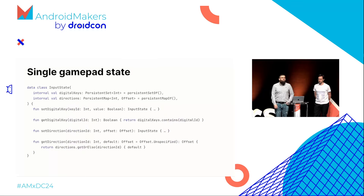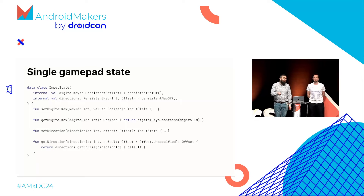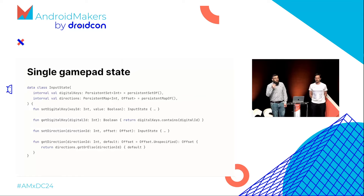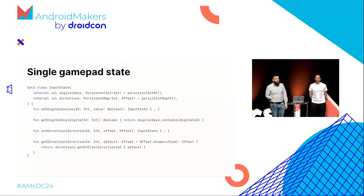The single gamepad state is basically an immutable class consisting of a set of digital keys — Boolean properties like whether a button is pressed or not — and a set of directions. The analog maps to a direction made of an offset with X and Y components. The data structure is immutable: setDigitalKey creates a copy of the input state, and same for setDirection — we always create new copies using immutable data structures.